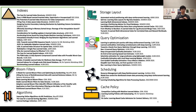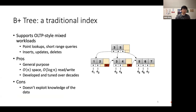To give context for learned indexes, I'll first describe traditional non-learned indexes. The most well-known is the B+ tree — an index over sorted data that supports OLTP-style mixed workloads, meaning a mix of both read operations like point lookups and short range queries, as well as write operations like inserts, updates, and deletes. Advantages include being very general purpose, working on essentially any data type, having nice space usage and performance properties, and being widely used after being developed and tuned over many decades.